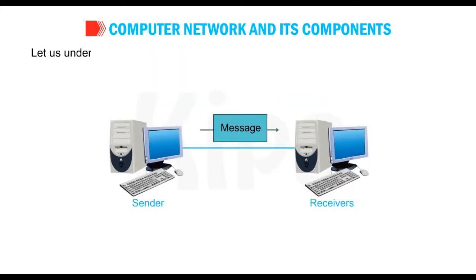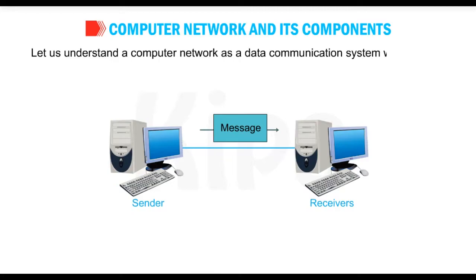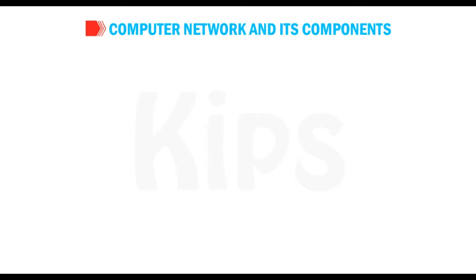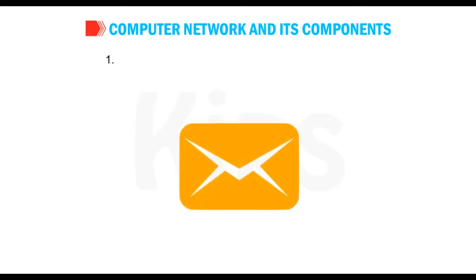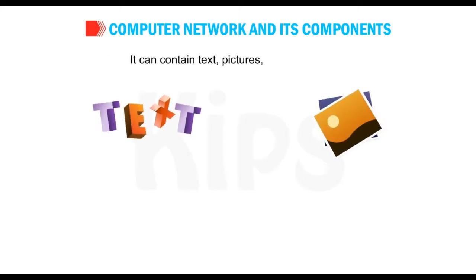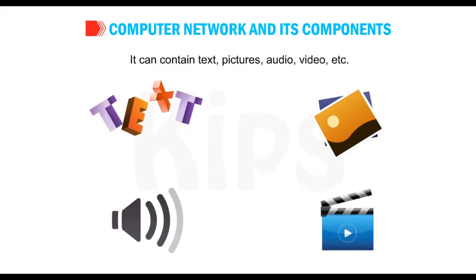Let us understand a computer network as a data communication system with the help of the following figure. It consists of the following parts. Number 1: Message — it is the information to be communicated. It can contain text, pictures, audio, video, etc.